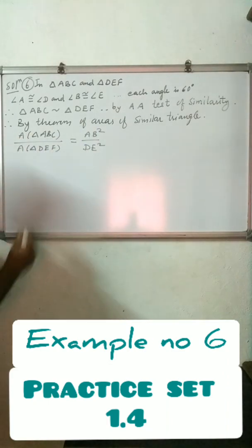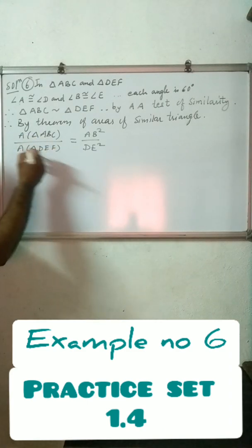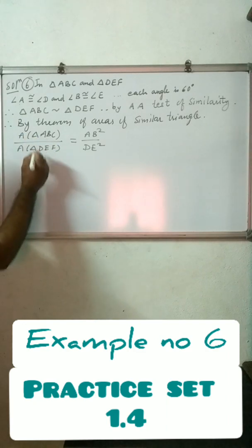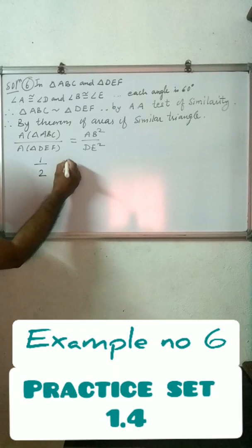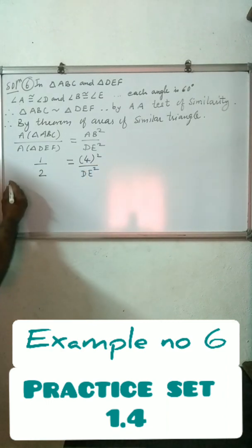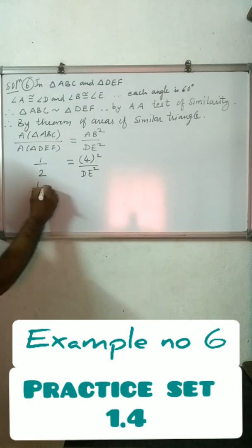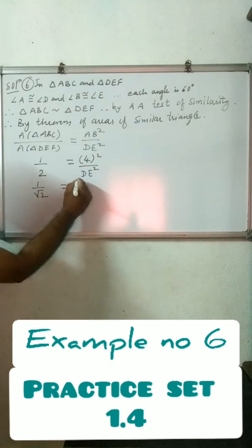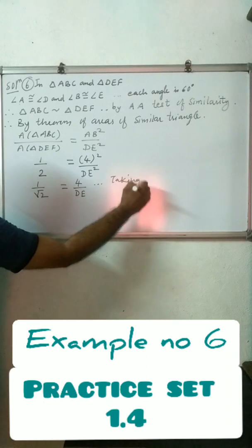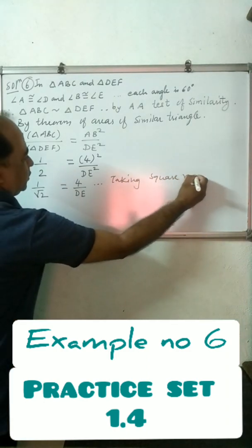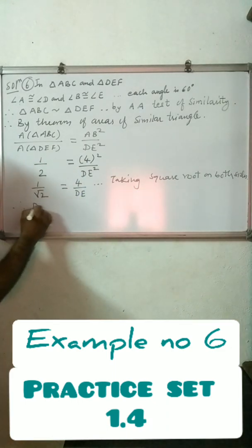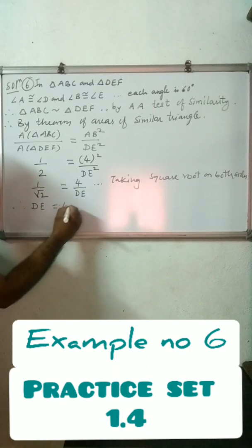We can apply the theorem of area of similar triangles. Area of triangle ABC upon area of triangle DEF is equal to AB square upon DE square. Therefore, 1 upon 2 is equal to 4 square upon DE square. Taking square root of both sides: square root of 1 is 1, square root of 2 is root 2. So 1 upon root 2 equals 4 upon DE. By cross multiplication, DE is equal to 4 root 2 units.